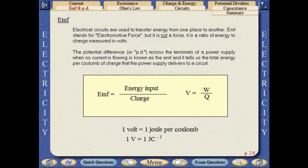The potential difference, or PD, across the terminals of a power supply when no current is flowing, is known as the EMF. And it tells us the total energy per coulomb of charge that the power supply delivers to a circuit.